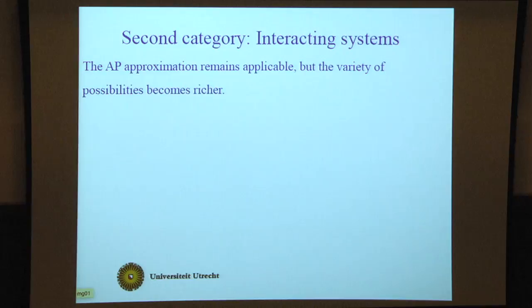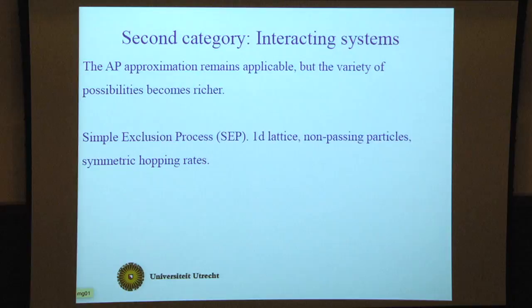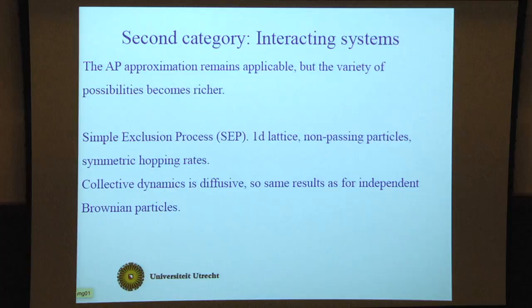The second category is interacting systems. The Alexander-Pincus approximation remains applicable but you get a richer variety of possibilities. First example is the simple exclusion process: one-dimensional lattice particles that hop to neighboring sites but can't pass neighbors. The hopping rates are symmetric, so collective dynamics is diffusive and the same results hold as for independent Brownian particles.